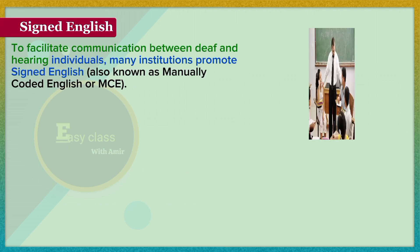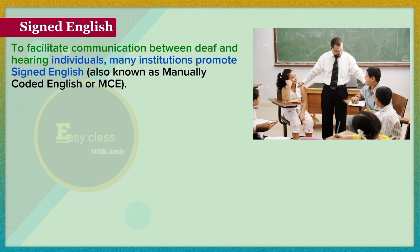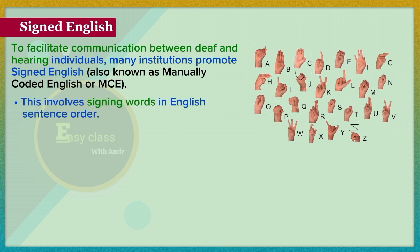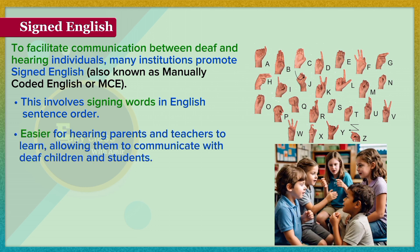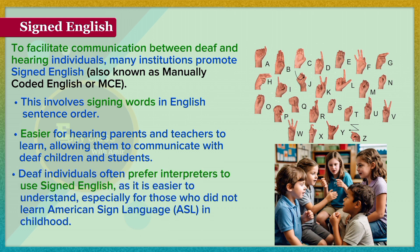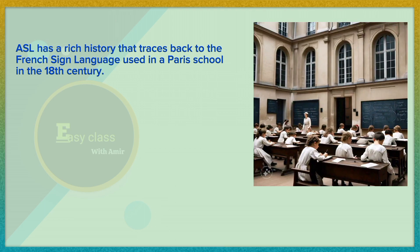To facilitate communication between deaf and hearing individuals, many institutions promote Signed English, also known as Manually Coded English, or MCE. This involves signing words in English sentence order, making it easier for hearing parents and teachers to learn, allowing them to communicate with deaf children and students. Additionally, deaf individuals often prefer interpreters to use Signed English, as it is easier to understand, especially for those who did not learn ASL in childhood.